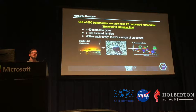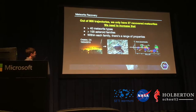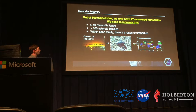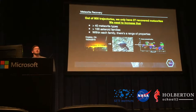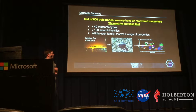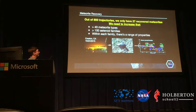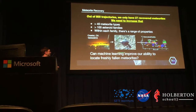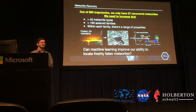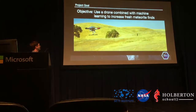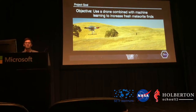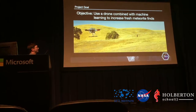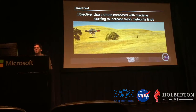Each of these asteroid families has a range of different properties. In order to draw a line from a trajectory to a certain type of material and say what asteroid families are composed of, we really need to increase the number of recovered meteorites. So our question is: can machine learning improve our ability to locate freshly fallen meteorites in the field? Our objective is using an autonomous drone combined with machine learning to automate this process. I'll hand it over to Chris.